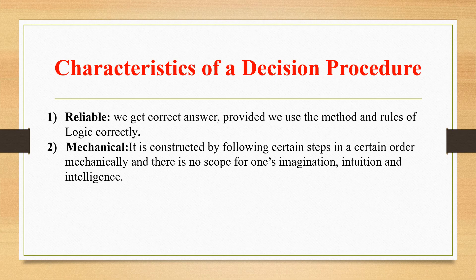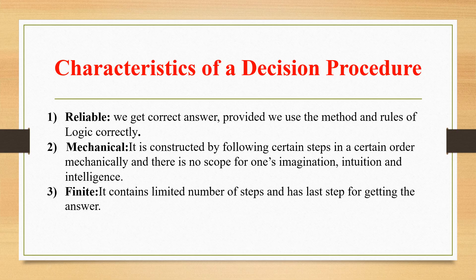Second, it is mechanical, meaning to construct it we follow certain steps in a certain order, and these steps are to be followed mechanically. There is no scope for one's imagination, intuition, or intelligence. Third, the decision procedure is finite — that is, it contains a limited number of steps, ending at the last step for getting the answer.